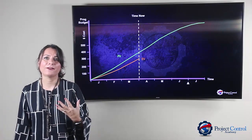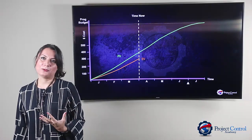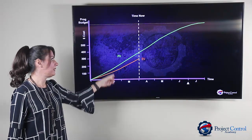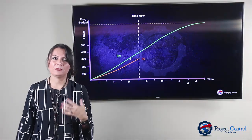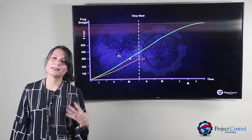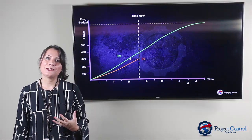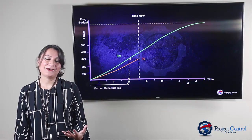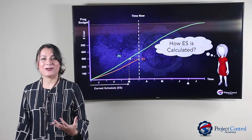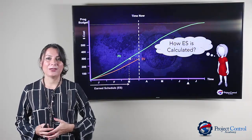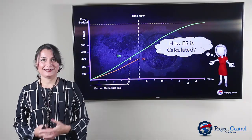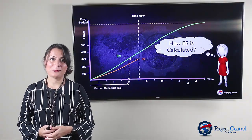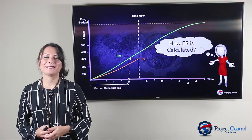What if the Earned Schedule falls in between two periods? For example, in a case where it falls in between two periods, how can you calculate Earned Schedule? Let me show you how you can do that by walking you through the formulas for Earned Schedule. I'm going to my computer screen to show you exactly how you can do that.